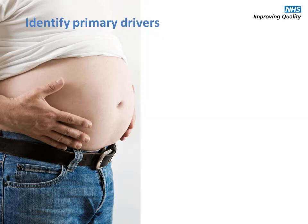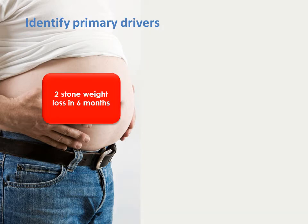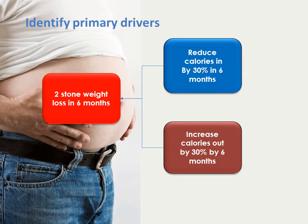Next we introduce the primary drivers. These are system components or factors which contribute directly to achieving our aim. In this weight loss example, you'd be looking at either reducing the calories this gentleman takes in, or increasing the calories that he expends — and you can see there are measures built in there. Primary drivers are so called because they drive the achievement towards our main aim, and they may act together or independently to achieve the overall aim.